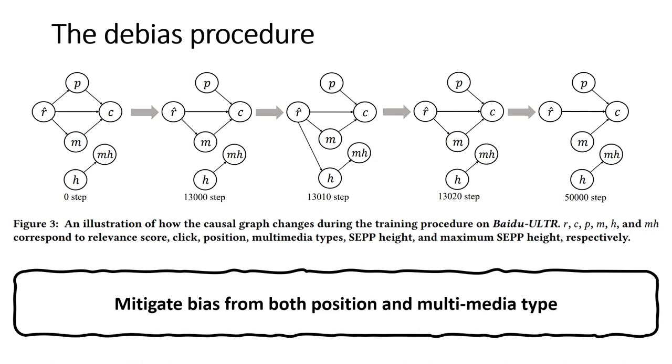We also checked the causal graph to see whether we really mitigated those biases. At first, the multimedia type and position were sources of bias, but in the end, the bias and backdoor are mitigated.